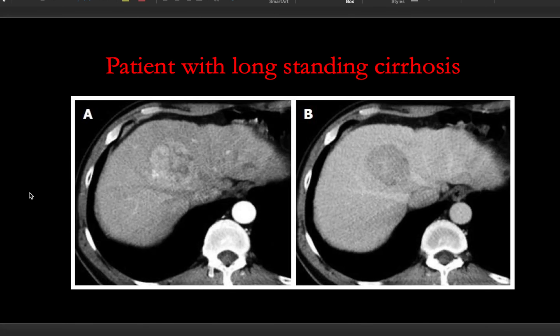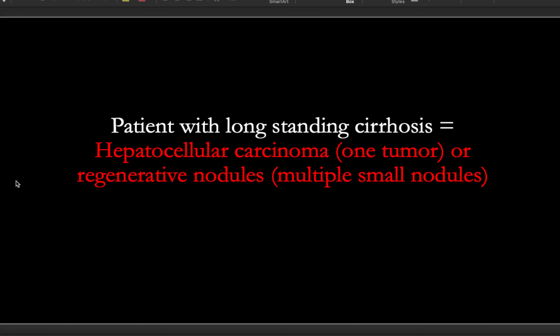If you have a patient with long-standing cirrhosis and they have one very well-circumscribed lesion, you're suspicious for hepatocellular carcinoma. Management goes beyond this video, but you're looking at either a PET scan or surgical resection. Another possibility in long-standing cirrhosis is regenerative nodules — just know that they exist.